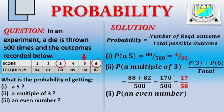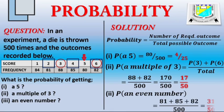Lastly, let's consider the probability of getting an even number. Our even numbers here are 2, 4, and 6 with different outcomes. So what we do, we add their outcomes together over the total possible outcome, which is 500. That gives us 81 plus 85 plus 82 over 500. So our final answer, 31 over 50.